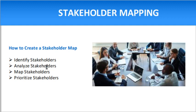The second step is to analyze each stakeholder — their expectations, requirements, influence, and interest. Determine what type of stakeholder they are: a positive stakeholder who wants the project completed, or a negative stakeholder who doesn't want it completed because their current legacy work will be impacted.